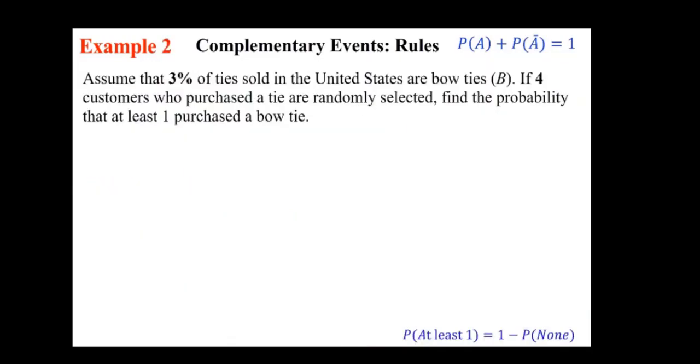Here's the next one. Assume that 3% of ties sold in the United States are bow ties (B). If four customers who purchased a tie are randomly selected, find the probability that at least one purchased a bow tie. This is an example where complementary events and using the concept of P(A) plus P(A') equals 1, as well as P(at least 1) is 1 minus P(none), is really helpful. First and foremost, it's important for us to understand when we are dealing with statistics, we are really dealing with real problems.